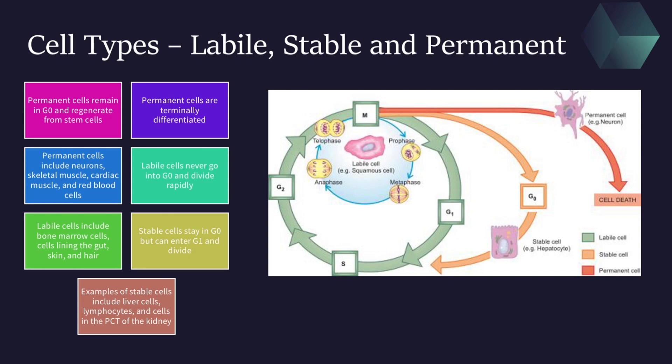The way labile cells regenerate and replace themselves is really interesting. While going through cell division, one of the two daughter cells actually becomes a new stem cell. This occurs so that the daughter cell can restore the population of stem cells that were lost. Remember, labile cells are rapidly dividing and never go into G0, with a very short G1 phase.